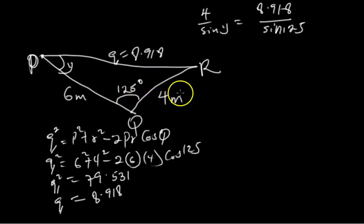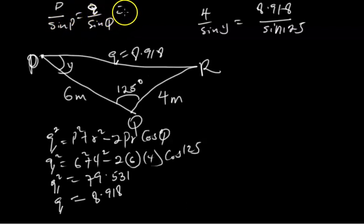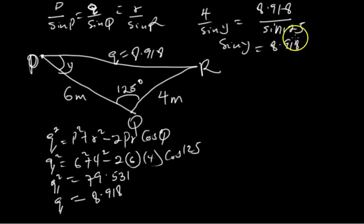The sine rule states that the side over the sine of the angle opposite it equals another side over the sine of its opposite angle. We can establish that P over sine P equals Q over sine Q equals R over sine R. If we cross-multiply...